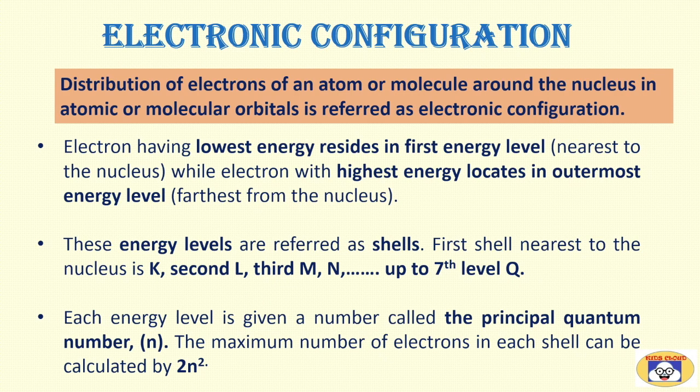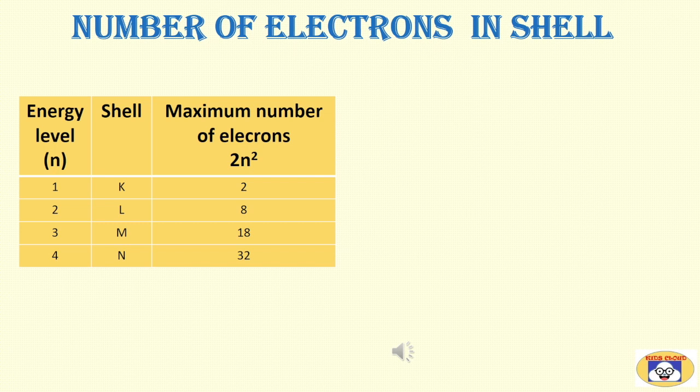First shell nearest to the nucleus is K. Second is L. Third is M. Fourth is N. After seventh level Q, shells are present. Each energy level is given a number called the principal quantum number N. The maximum number of electrons in each shell can be calculated by 2N square. Here we are taking into consideration first four shells and calculating the maximum number of electrons present in these four shells.